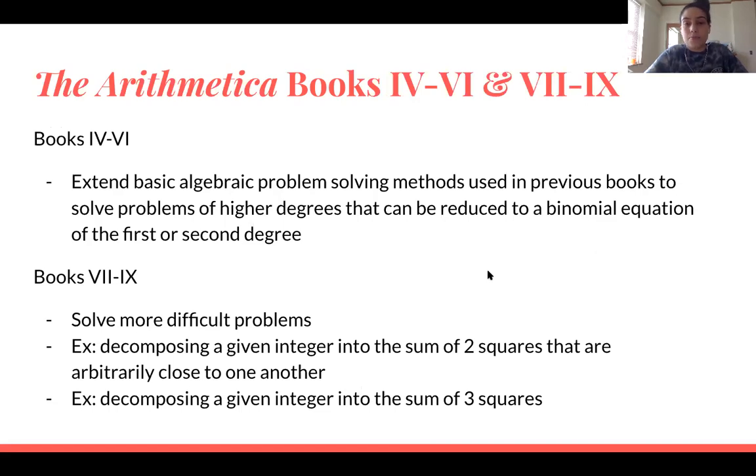And then just a little bit more information about books four to six and seven to nine. So from books four to six in the Arithmetica, basically, Diophantus extended basic algebraic problem-solving methods used in the previous books to solve problems of higher degrees that could be reduced to a binomial equation of the first or second degree. And then in books seven to nine, Diophantus solved more difficult algebraic problems. For example, he solved problems with decomposing a given integer into the sum of two squares that are arbitrarily close to one another. Another example is Diophantus solved problems decomposing a given integer into the sum of three squares.